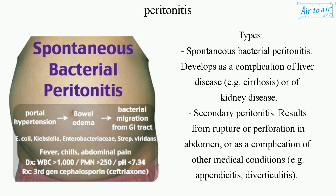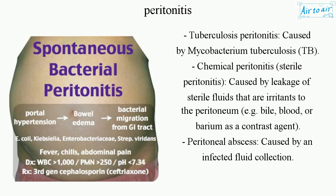Secondary peritonitis results from rupture or perforation in the abdomen, or as a complication of other medical conditions, e.g. appendicitis, diverticulitis. Tuberculosis peritonitis is caused by Mycobacterium tuberculosis (TB).